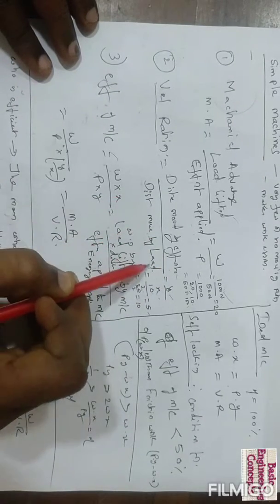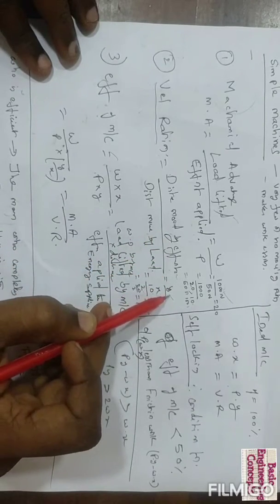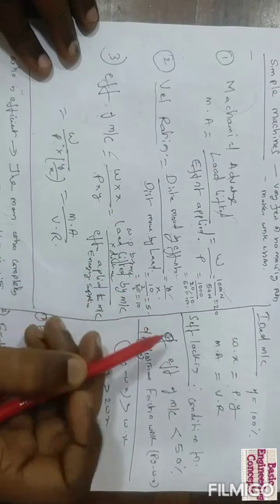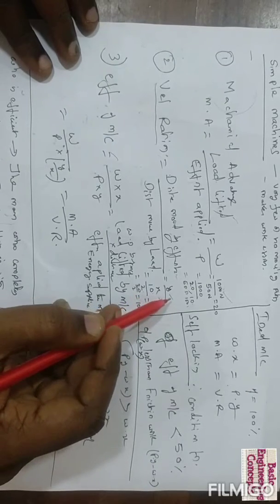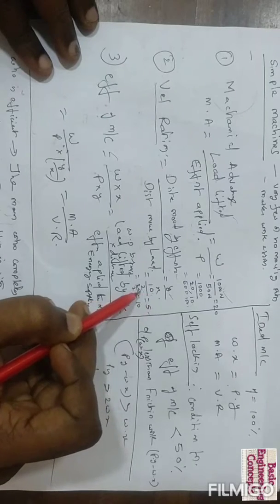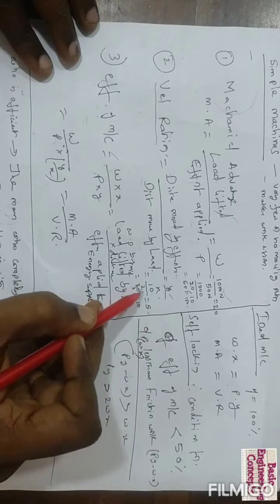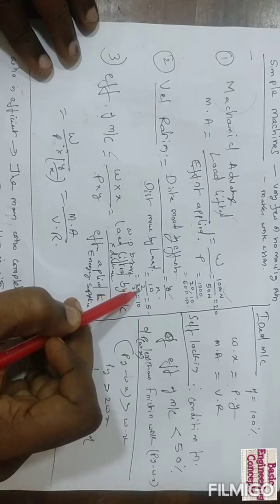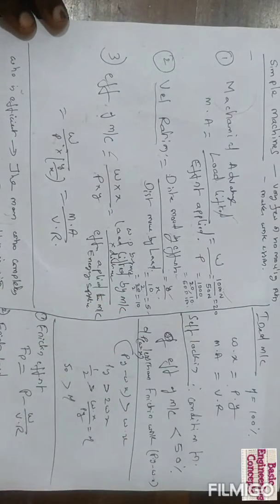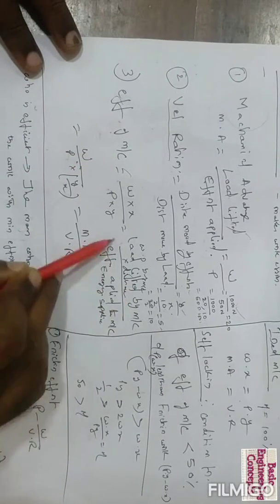Velocity ratio is defined as the distance moved by the effort divided by the distance moved by the load. Distance moved by the effort is designated as y and distance moved by the load is x. For example, if the distance moved by the effort is 10 meters and the distance moved by the load is 2 meters, then velocity ratio is 5. If distance moved by effort increases to 20, velocity ratio becomes 10.